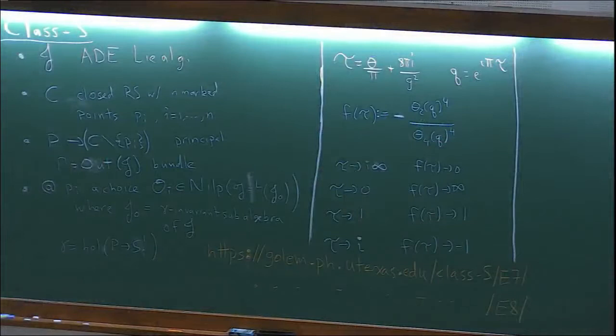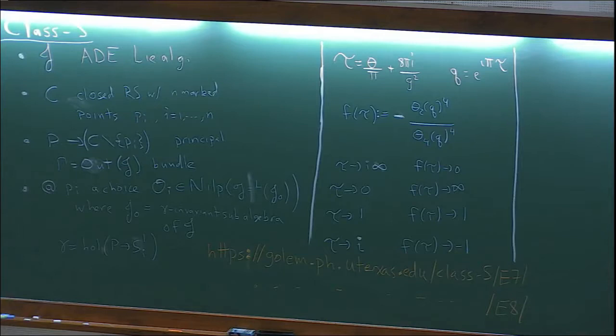J naught is the invariant subalgebra, the one preserved by the holonomy of P restricted to the circle. Its Langlands dual is G. You choose a nilpotent orbit in G. So J naught is just J, and since J was simply laced, its Langlands dual is itself. In the other cases it's something different.